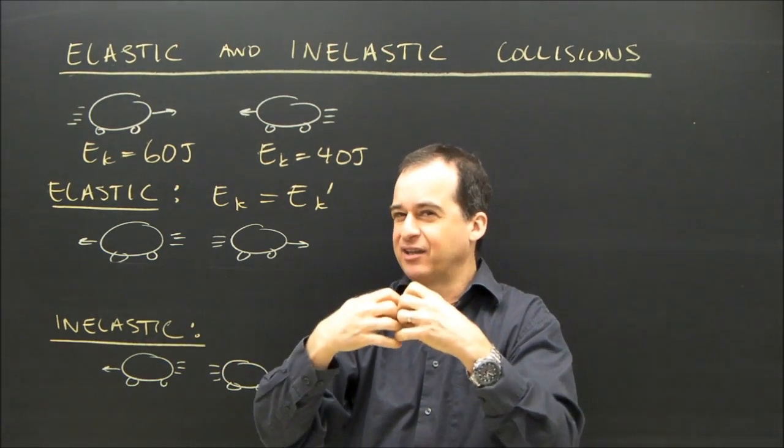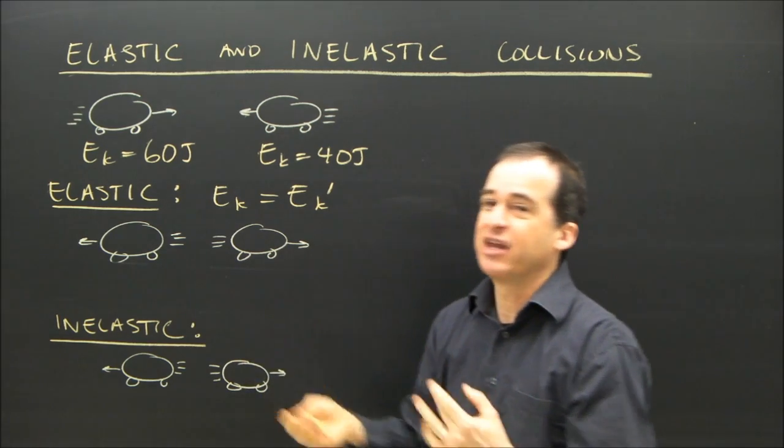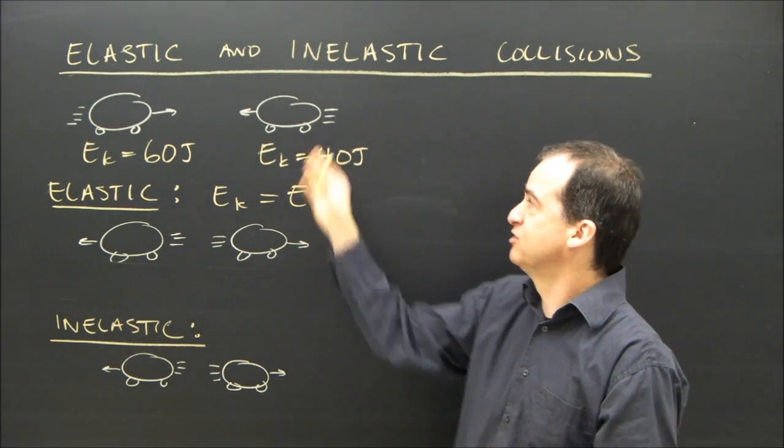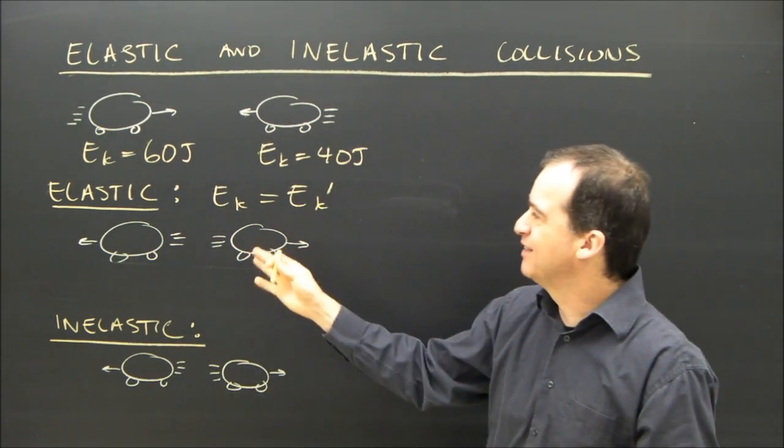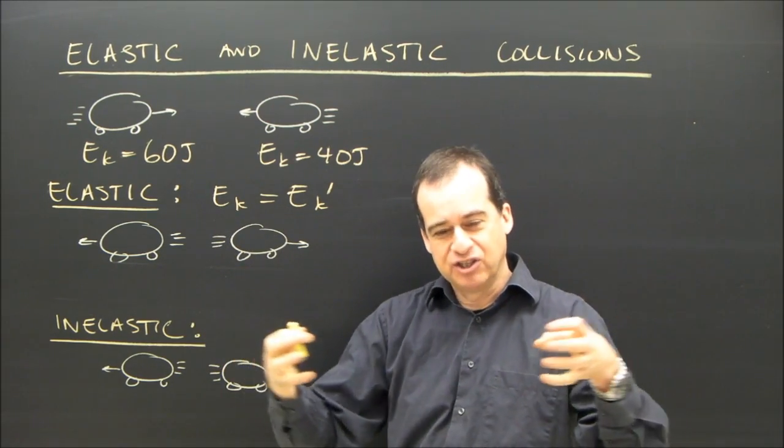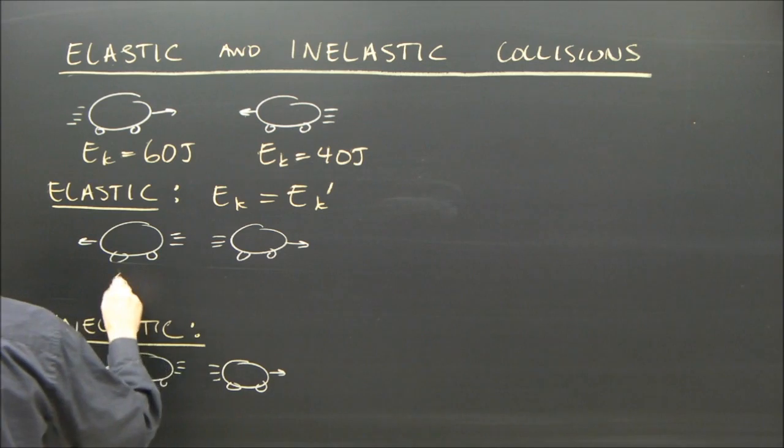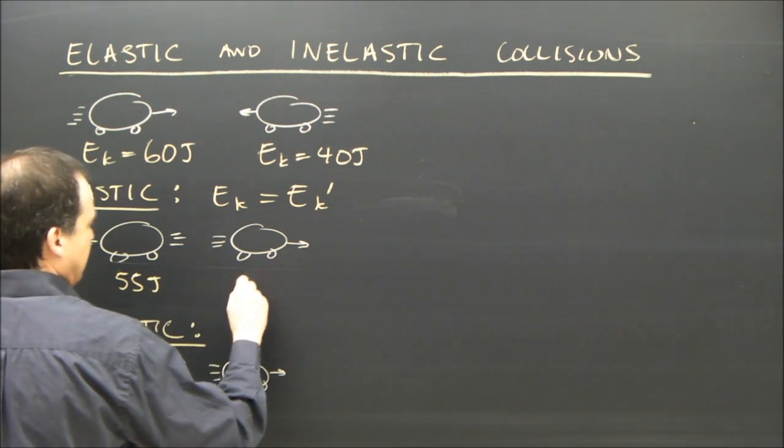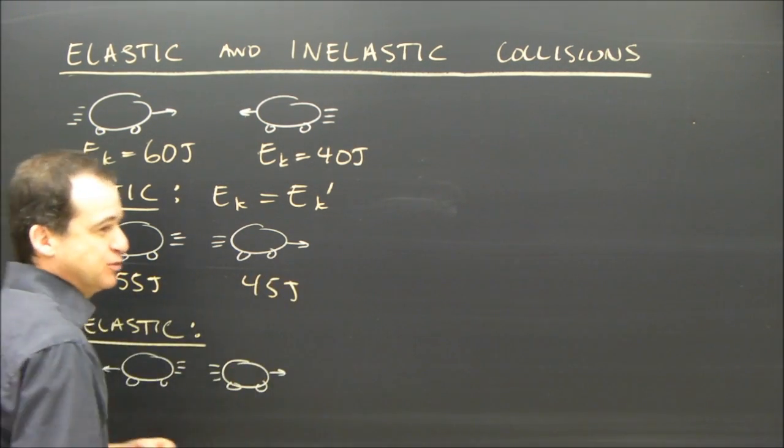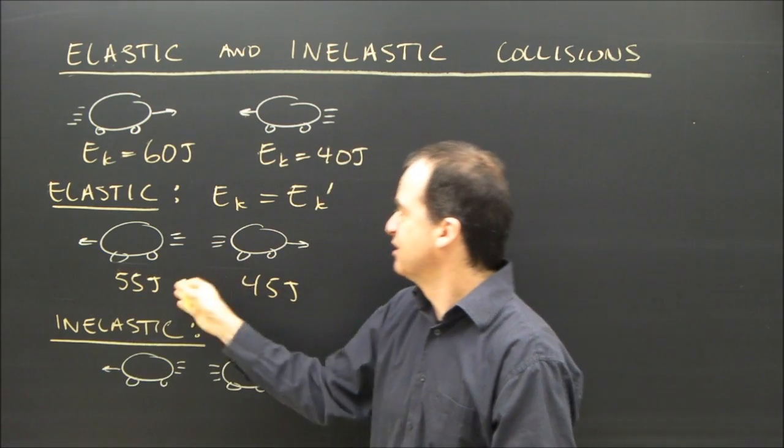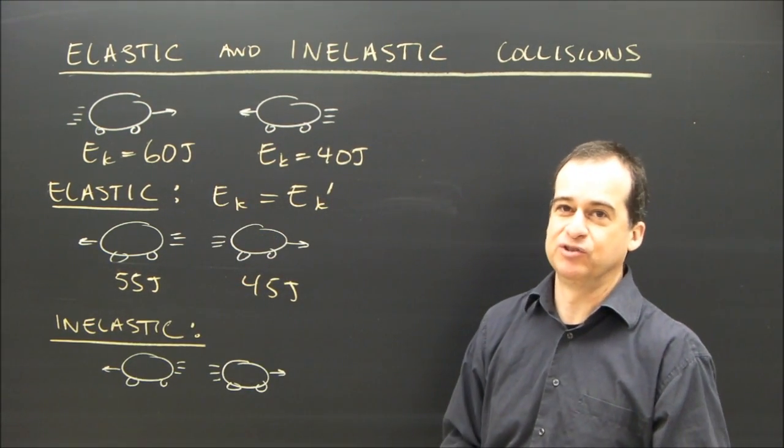If they change shape and they keep in that shape, then some of that energy is lost to bending and changing the shape of the objects. But in this case, it's an elastic collision. Whatever energy they went into the collision with, they come out. So this might have 55 joules and this might have 45 joules, but the total afterwards is equal to what it was before. It's still 100 joules.